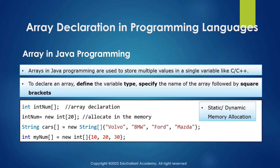In Java, you can use dynamic memory allocation. In other words, Java supports a static or dynamic data structure, giving more flexibility compared to C++.